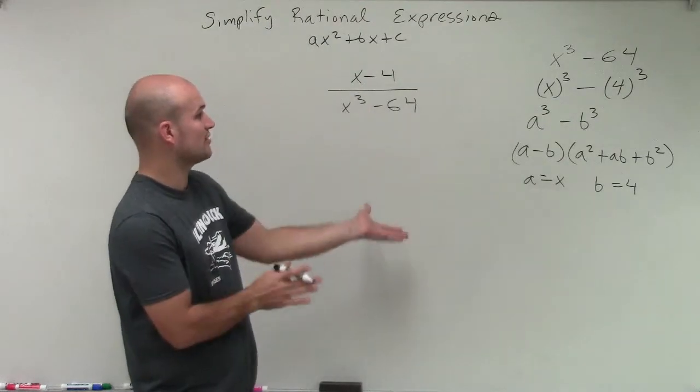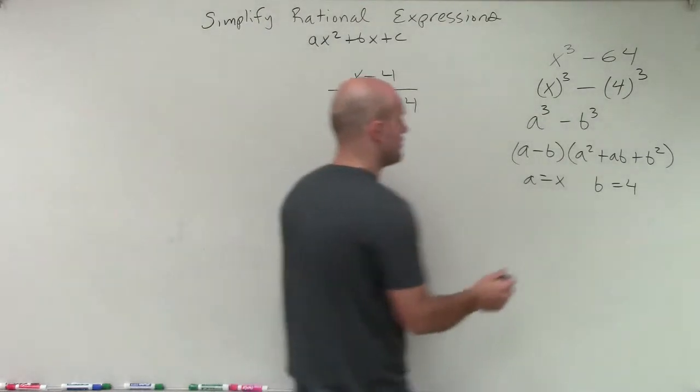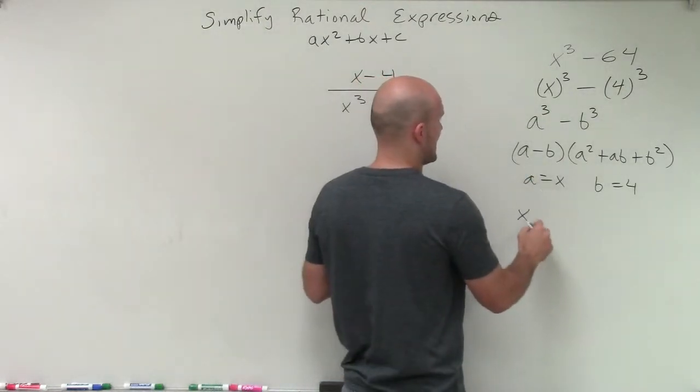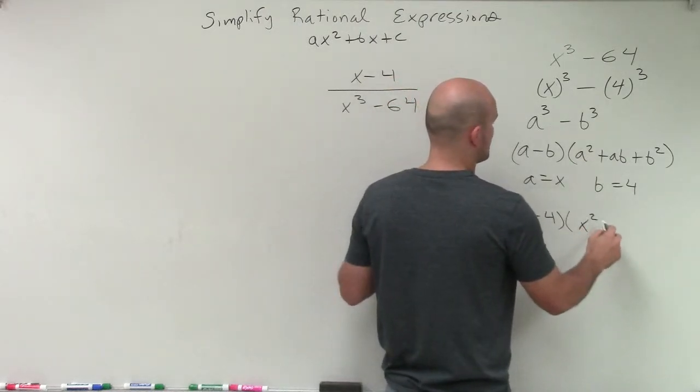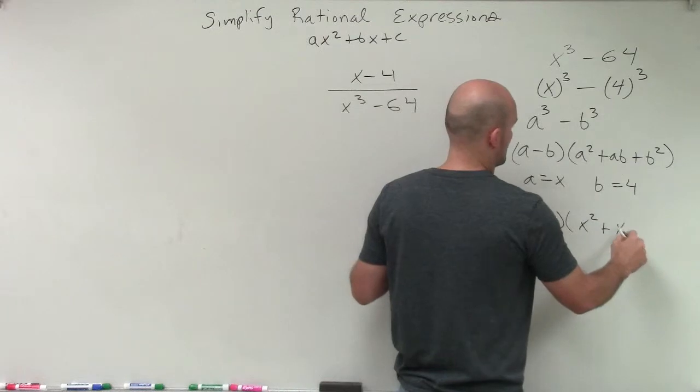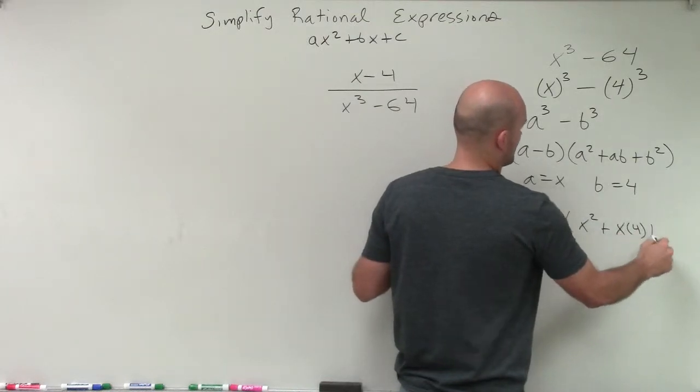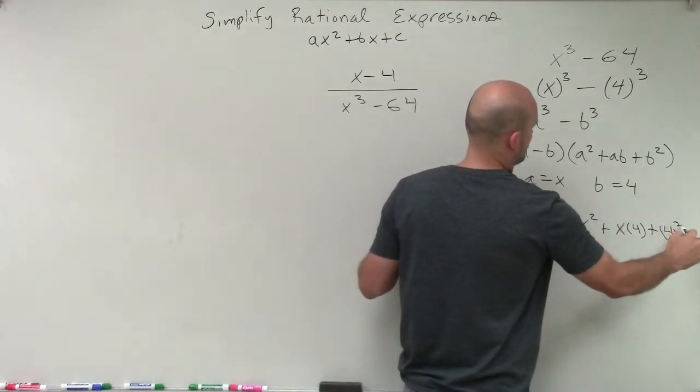So now what I'm going to do is I'm just going to pretty much rewrite this back into this format. So therefore, I'll have x minus 4 times x squared plus x times 4 plus 4 squared.